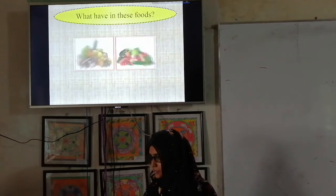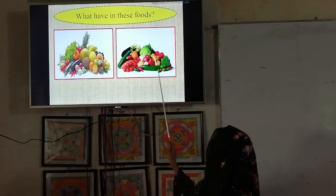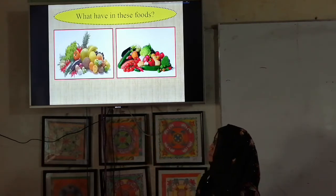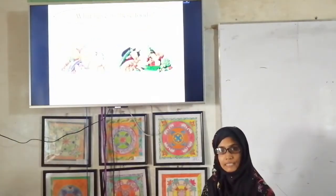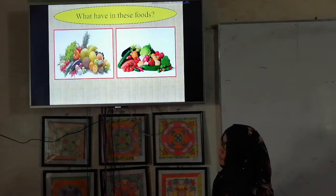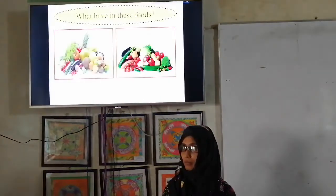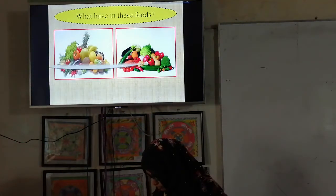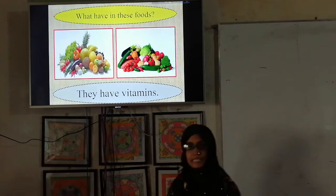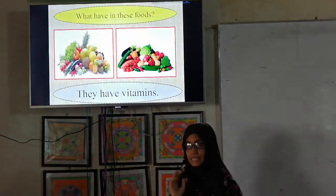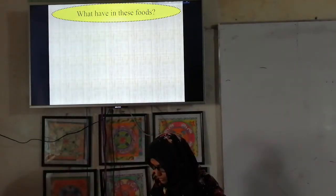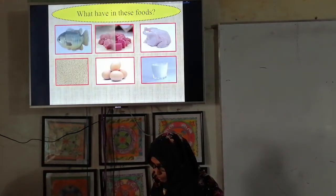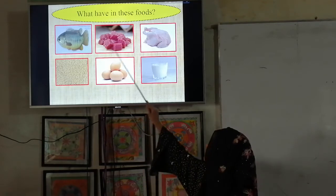What is in these foods? We already discussed in the food pyramid what is in vegetables and fruits. What do we get from these foods? I hope you will be able to say — they have vitamins. What is in these foods — meat, chicken, egg, milk? What do we get from them?